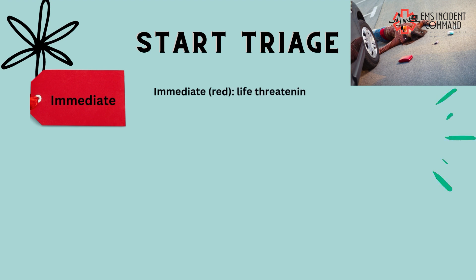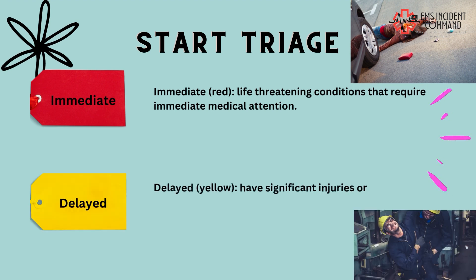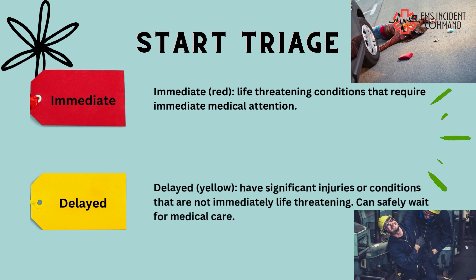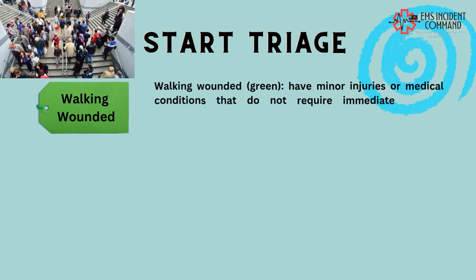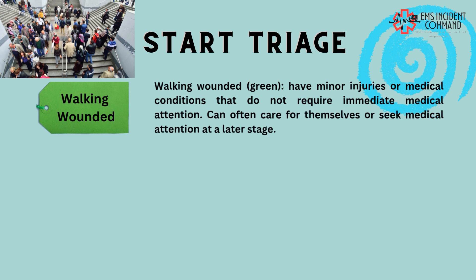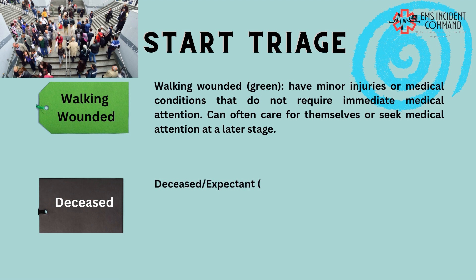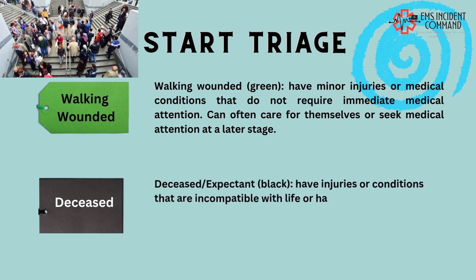START triage employs color-coded ribbons or tags for patient categorization. The colors commonly used are red (immediate), yellow (delayed), and green (minimal). Immediate red patients have life-threatening injuries or conditions requiring immediate medical attention. Delayed yellow patients have significant injuries that are not immediately life-threatening and can safely wait for medical care. Walking wounded green patients have minor injuries that do not require immediate attention and can often care for themselves. Deceased/expectant black patients have injuries incompatible with life or have already succumbed to their injuries.